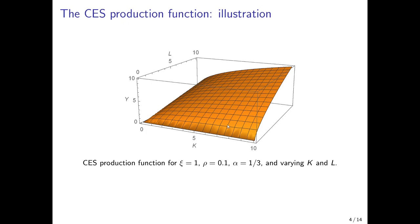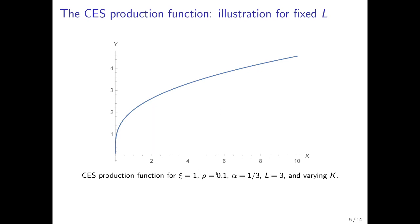We can cut the production function to take a partial look at what happens if we increase only one of the two production factors while holding the other constant. Here we fix labor and only vary the capital stock. What we see is that if we do not employ any capital, we cannot produce. The first unit of capital increases output quite a bit and then it levels off, so we have a positive but decreasing marginal product with respect to capital.